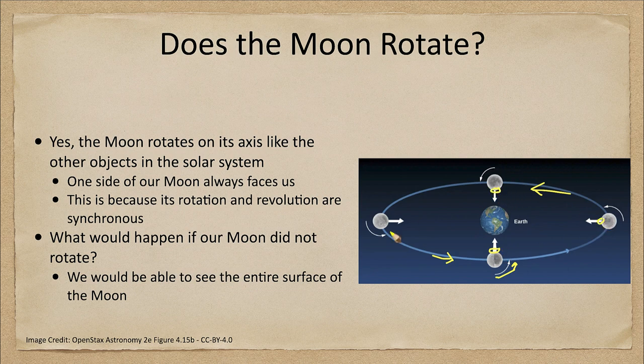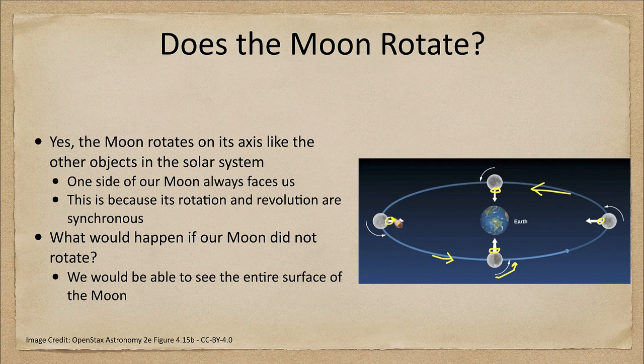Now how would this differ if the moon did not rotate? If the moon did not rotate, then we would be able to see the entire other side of the moon. Let's take a look at that.